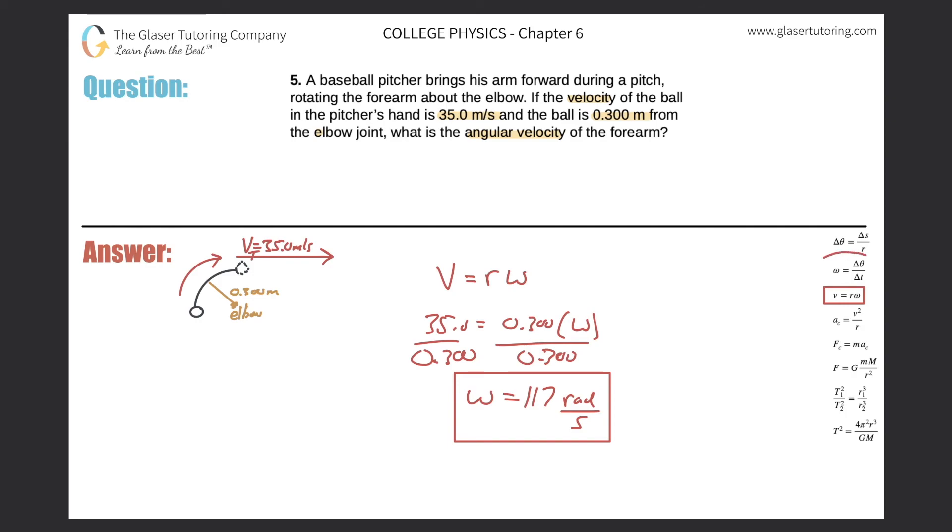Also, take a look at the angular velocity up here. Notice that it is theta divided by time. The standard unit for theta is not degrees in physics, it's radians. And the standard unit for time is seconds, so that's why the seconds are down there.